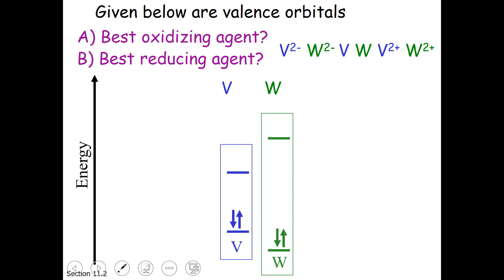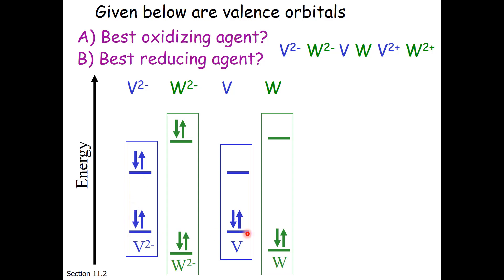But you notice that our choices are not just V and W. We also have some V2 minus and W2 minus, and V2 plus and W2 plus. So let's draw those. V2 minus and W2 minus have gained two electrons each. So I'm going to draw the same diagram, but this time, instead of two electrons, I will have four electrons to make V2 minus, and the same with W2 minus. For V2 plus and W2 plus, I am going to have the same levels for the valence electrons, but you notice that I have removed two electrons from V to make V2 plus, and from W to make W2 plus. So the energy levels are the same. We've just added or removed electrons.